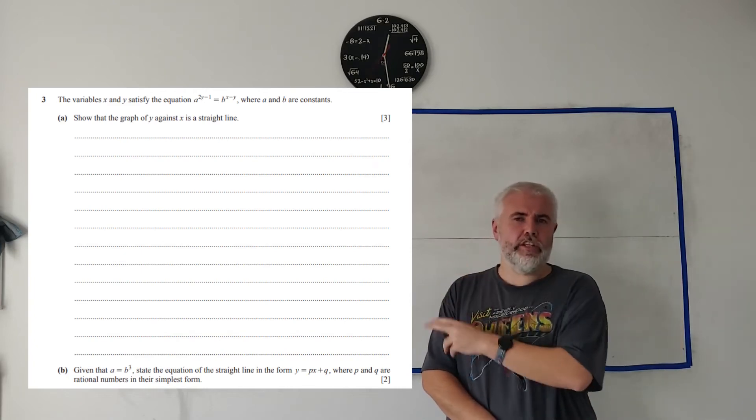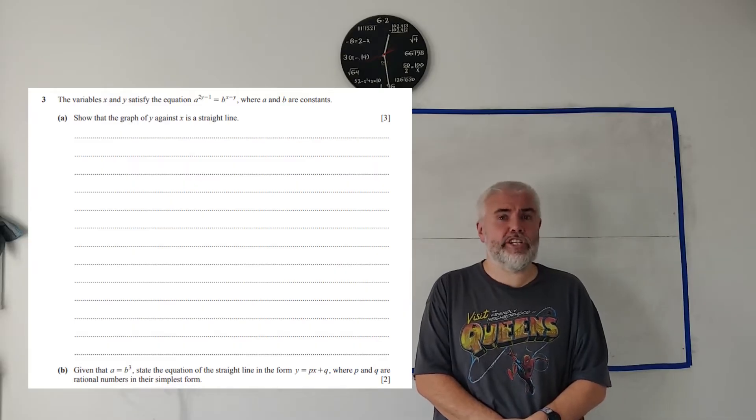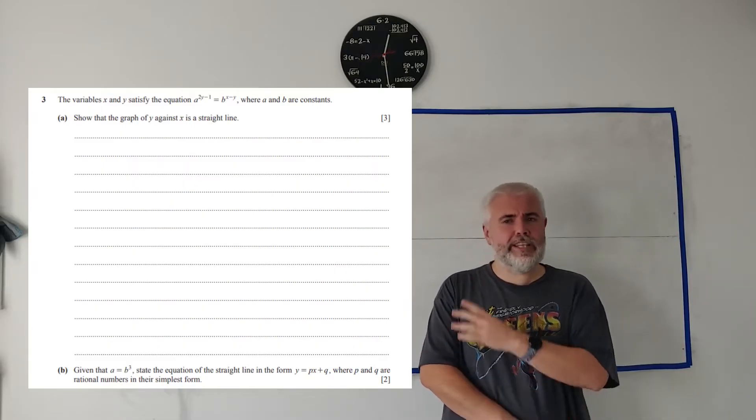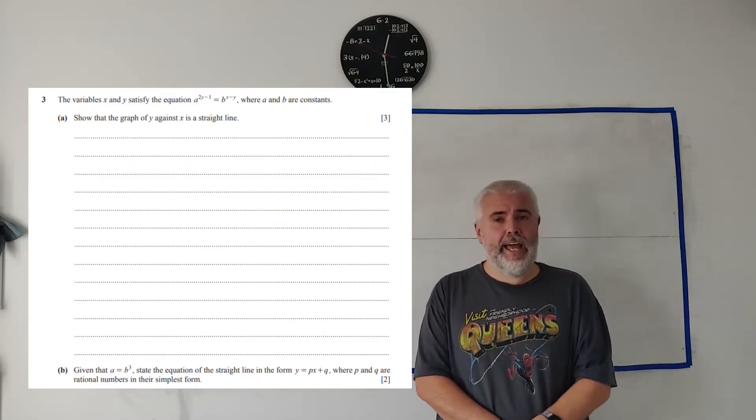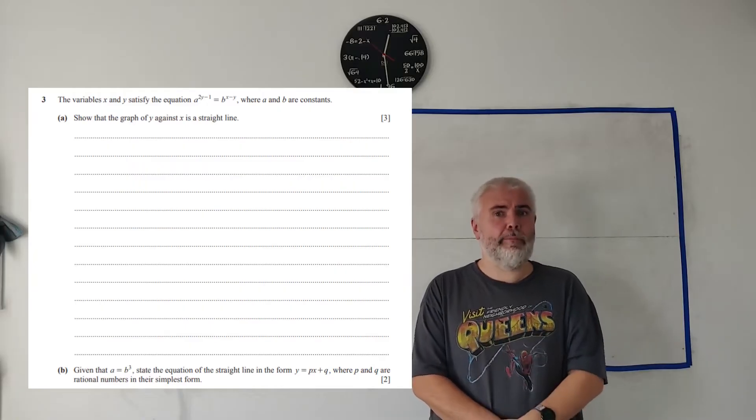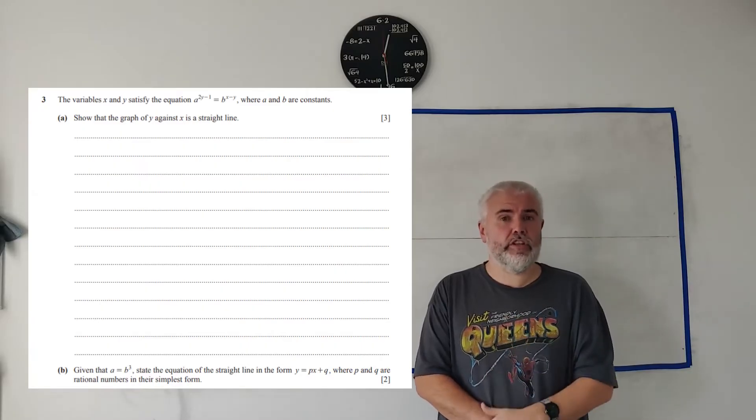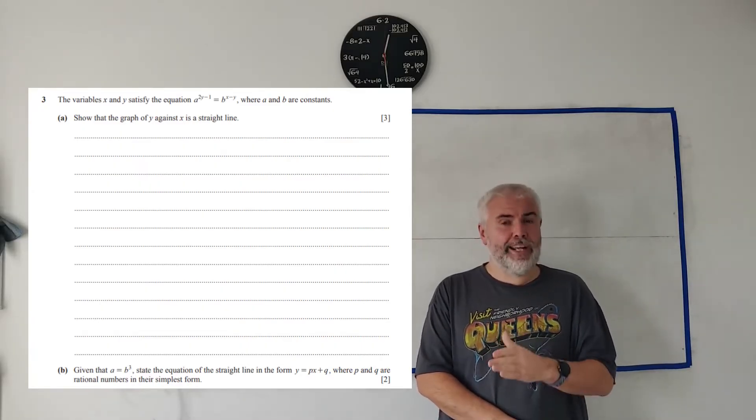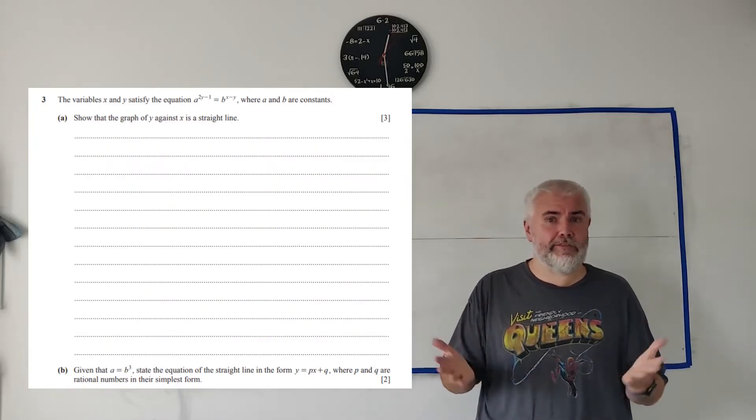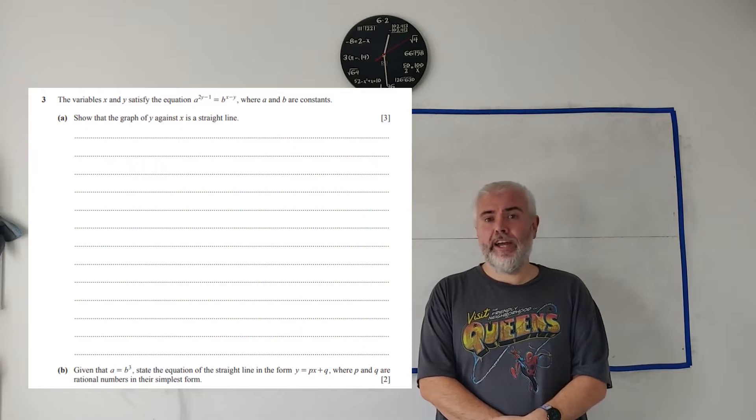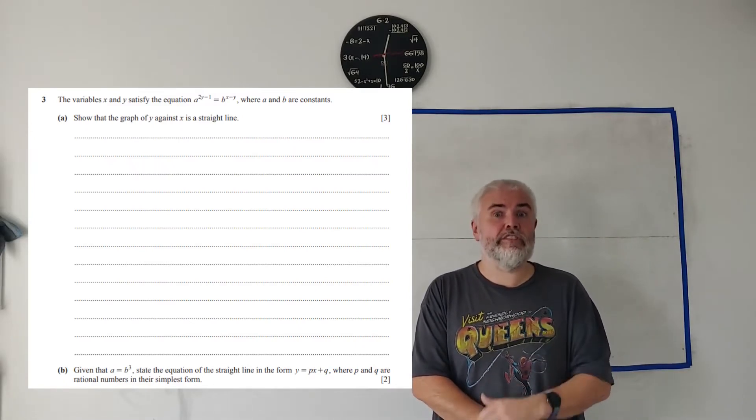In this video, I'll be working through the question you see on the screen from paper 3.2 from 2024 of the Cambridge A-Level exam. If you're looking for a different question from this paper, check out the description below for a link to a playlist. And if you're looking for a different paper entirely, have a look around on my channel. I'll be doing all this on a whiteboard, hopefully just like you're used to your teacher doing. But remember, we're not in a classroom, we're on YouTube. So take advantage of that. Use the pause, rewind and fast forward. And if you find this video or any of my videos useful, I would greatly appreciate liking, subscribing or even sharing.